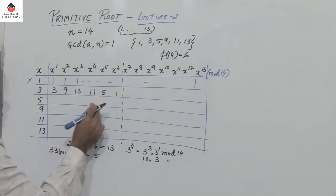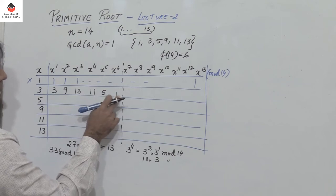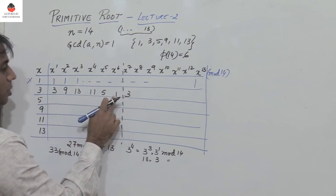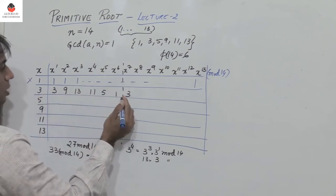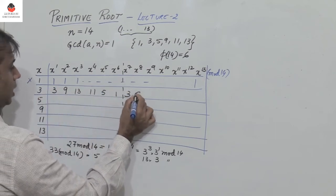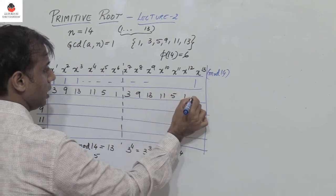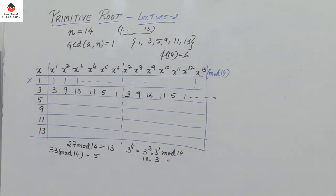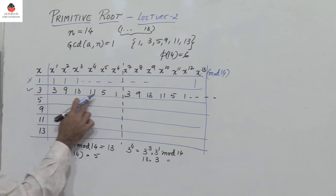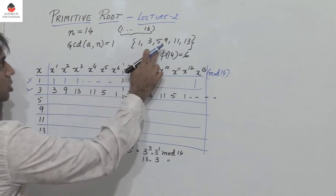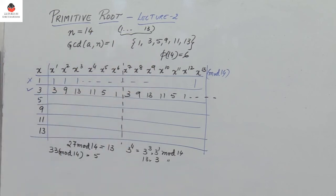Since I get a 1 here, the sequence repeats: 3, 9, 13, 11, 5, 1, and so on. So 3 generates all the numbers 1, 3, 5, 9, 11, 13 which are relatively prime to 14. Therefore 3 is a primitive root of 14.